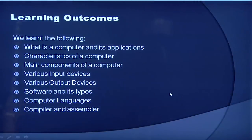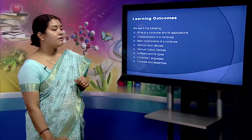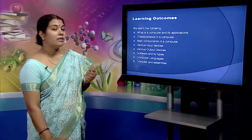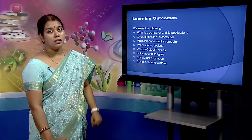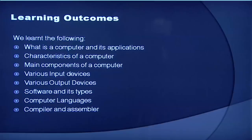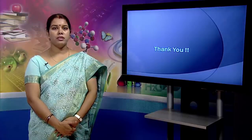So, we come to the learning outcomes. In this particular video we learnt what a computer is and its applications. We learnt the characteristics of a computer. We learnt the main components of the computer — the CPU, which has ALU, memory unit and control unit. We learnt the various input devices and the various output devices. We learnt software and its types. We learnt computer languages — high and low level languages — and we also learnt about compiler and assembler. From this video, learners have studied about basics of computer. Thank you so much.